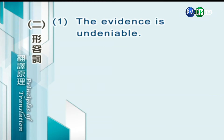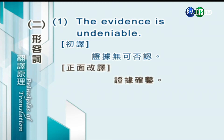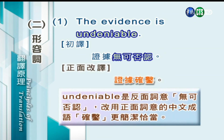第二种：形容词。"The evidence is undeniable." 直译：证据无可否认。我们正面来改一下：证据确凿。undeniable 是反面的词，译「无可否认」，我们改用正面词译的中文成语「确凿」，更简洁更恰当。